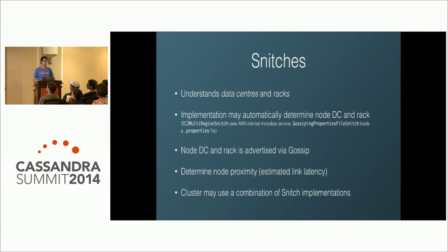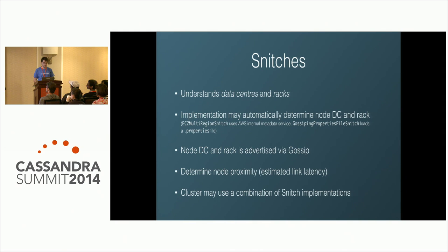Cassandra's data center awareness is achieved through a component called the snitch. The snitch is how Cassandra understands data centers and racks — it knows which DC and rack a node is located in. This can be automatic, like the EC2 multi-region snitch which uses Amazon's internal metadata API service to determine rack and region, or manual via the GossipingPropertiesFileSnitch, which loads rack and DC details from a properties file. Other nodes learn this information via Cassandra's internal gossip protocol.